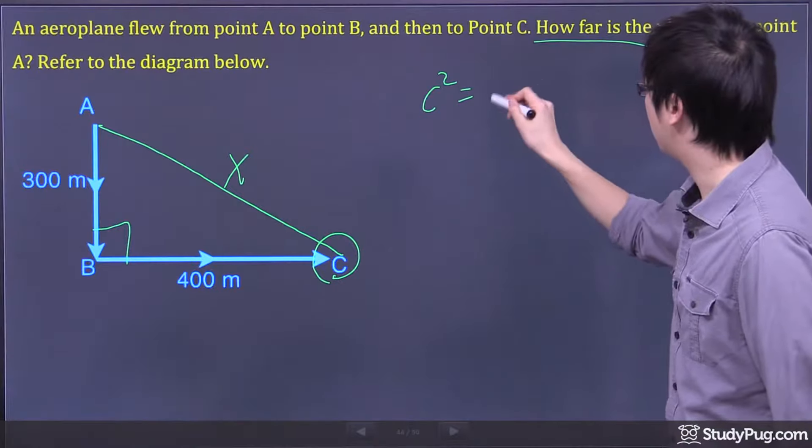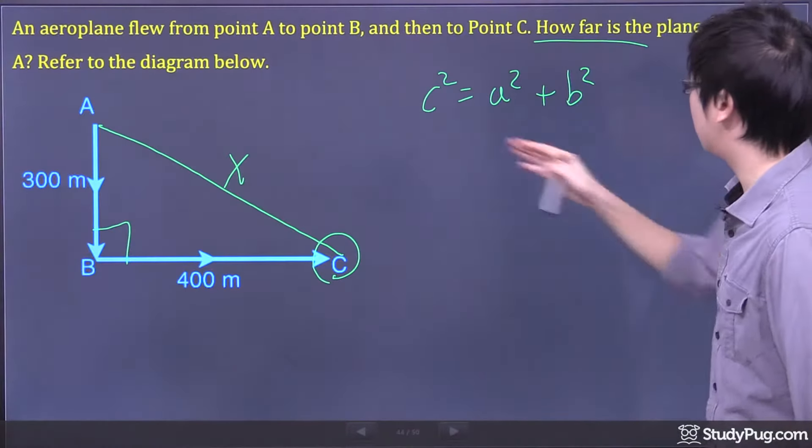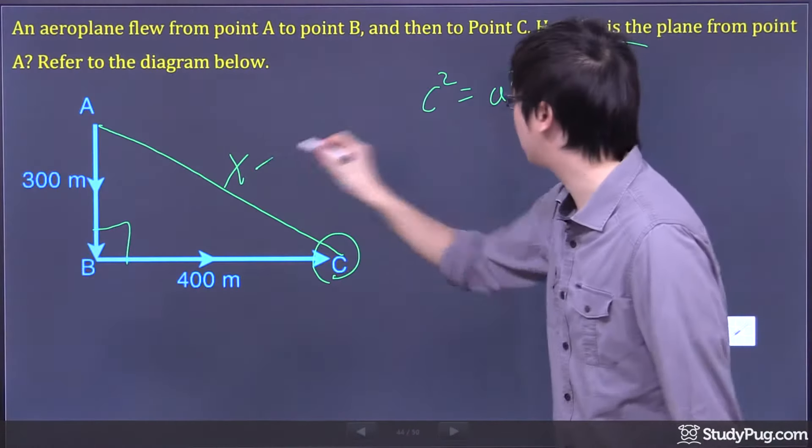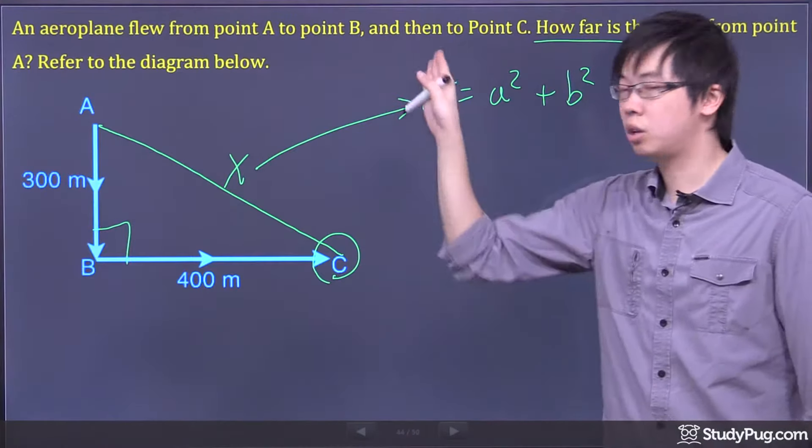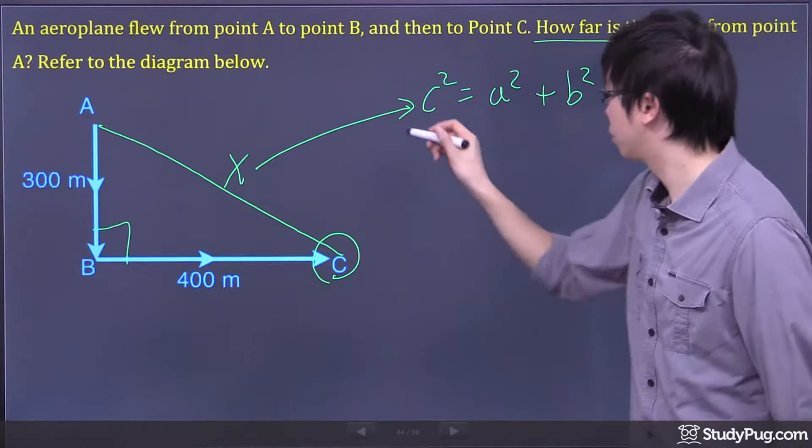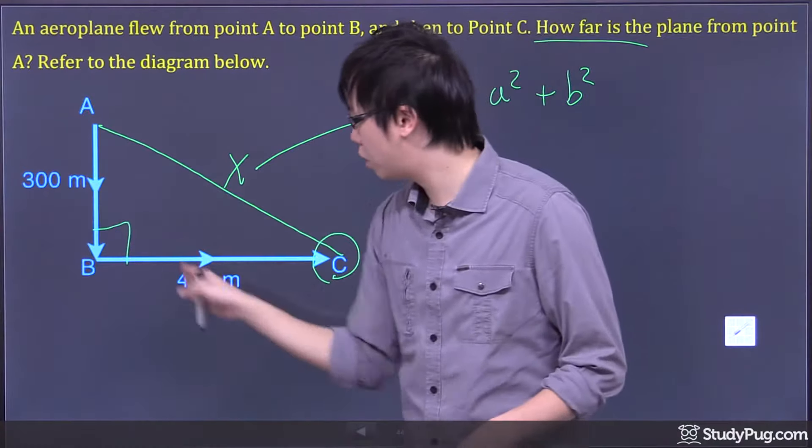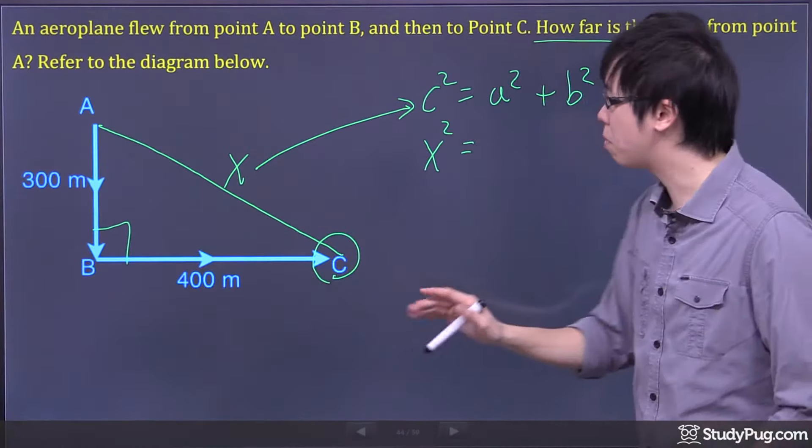So Pythagorean theorem, here it comes one more time. C squared equals A squared plus B squared. And once again, the hypotenuse is always the longest side of your right triangle. So you have to put your X squared here. But for A and B, it's your choice. You can put A for this one or this one, B for this and that, doesn't matter.